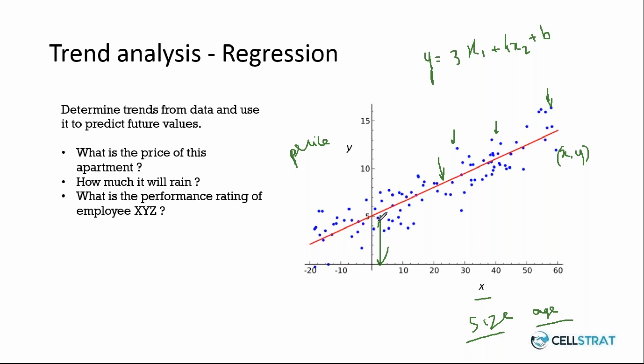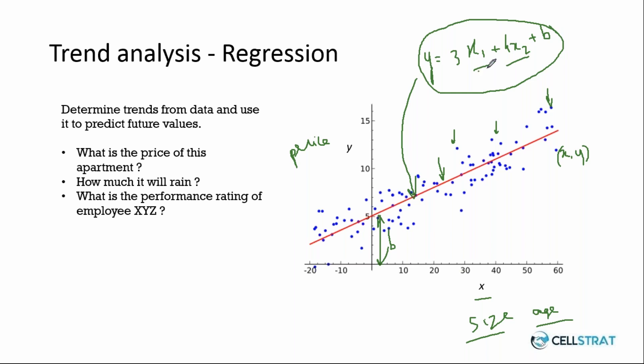The advantage of doing regression: if you are able to find the equation of this line, you can use it to predict future house prices. If a new house gets constructed in London, you just need its size and age, and you'll be able to predict the output Y — the price of the house. You can extrapolate this use case to so many other situations, for example, how much will it rain tomorrow, or what should be the performance rating of an employee.